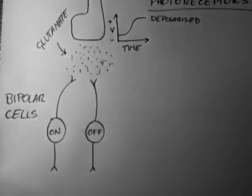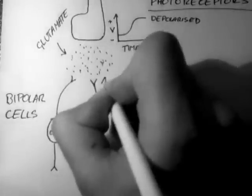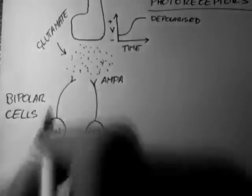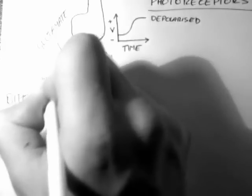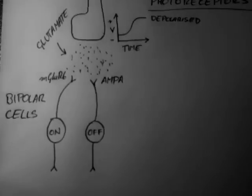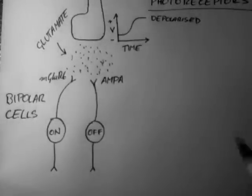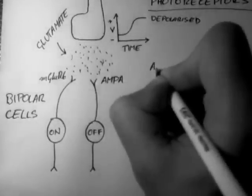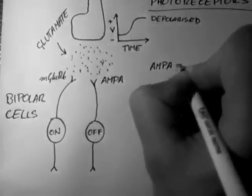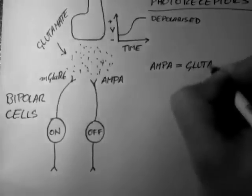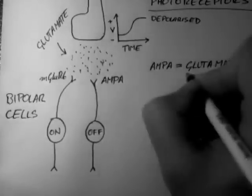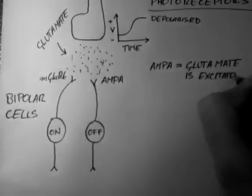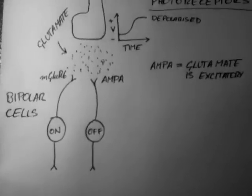The difference between the on and off bipolar cells is a receptor located in its process. In the off cell, this receptor is AMPA. And in the on cell, this receptor is mGluR6. Now they're both glutamate receptors, but they have a different action on the cell.